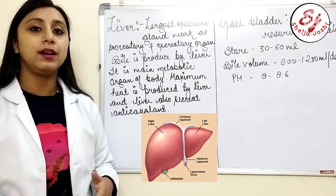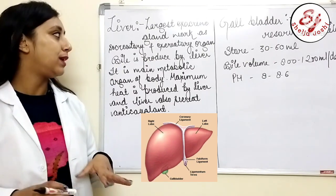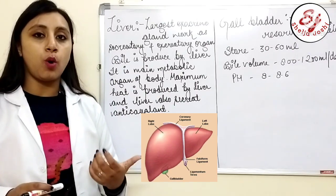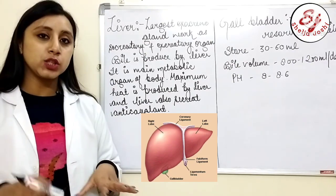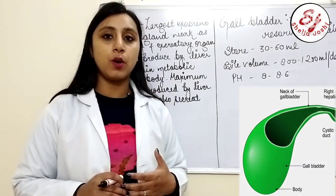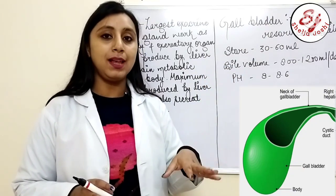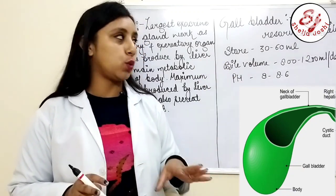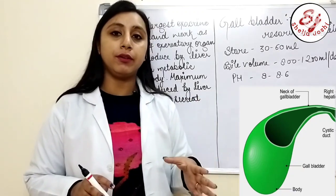The next accessory organ is the liver. The liver is the largest exocrine gland and works as both a secretory and excretory organ. It is the main metabolic organ of the body, produces maximum heat, and secretes the anticoagulant heparin. The last accessory organ is the gallbladder, which is a reservoir of bile. About 30 to 60 ml of bile is stored in the gallbladder, and the total volume of bile produced is about 800 to 1200 ml per day, with a pH of 8 to 8.6.